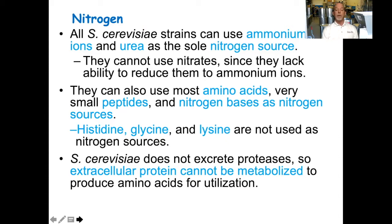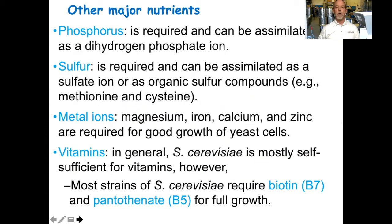S. cerevisiae does not excrete proteases, so extracellular protein cannot be metabolized to produce amino acids for utilization. Other major nutrients include phosphorus, which is required and can be assimilated as a dihydrogen phosphate ion; sulfur, which is required and can be assimilated as a sulfate ion or as organic sulfur compounds — for example, the amino acids methionine and cysteine. They also need metal ions such as magnesium, iron, calcium, and zinc, which are required for good growth of yeast cells.